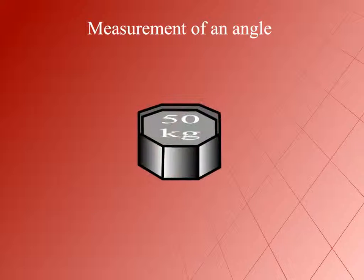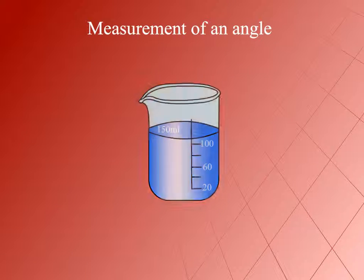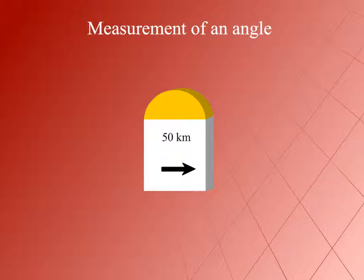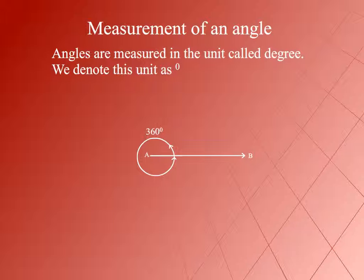Measurement of an Angle. Just as the mass of an object is measured in kg, volume is measured in litres, and length is measured in km, angles are measured in the unit called degree. A complete rotation of a ray forms an angle of 360 degrees at its endpoint. This is called a complete angle. Each part of 360 equal parts of a complete rotation measures 1 degree.